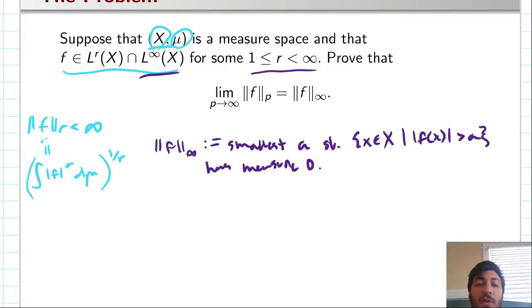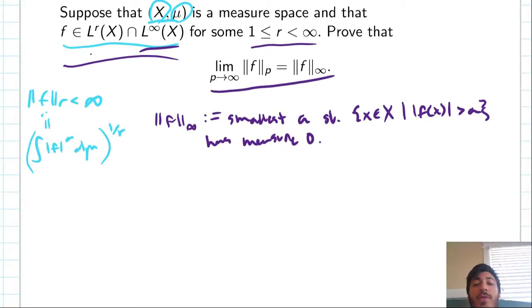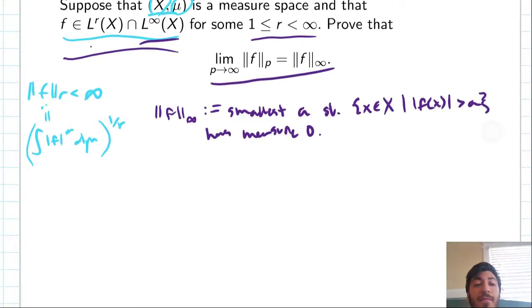So, just for further clarification, r is between 1 and infinity, but in particular, it's not infinity, so this statement on the left here is not really saying the same thing twice. And our goal here is to prove a limit of LP norms. Namely, to prove this limit: as p goes to infinity, these p norms of f actually approach the essential supremum of f.